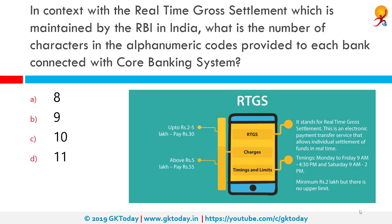In the context of RTGS maintained by the RBI in India, what is the number of characters in the alphanumeric codes provided to each bank connected with the core banking system? The correct answer is 11. Gross settlement means the transaction is settled on a one-to-one basis without bundling with any other transaction, and once processed, payments are final and irrevocable. RTGS systems are typically used for high-value transactions requiring immediate clarity.